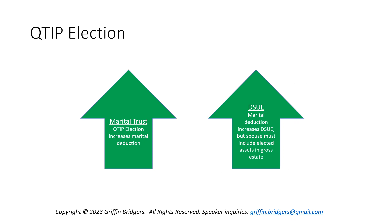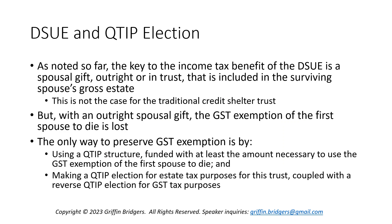As we can see here, the Q-tip election within the marital trust increases the marital deduction and the corresponding effect is that it increases the DSUI. The higher the DSUI, the greater the benefits we get — ideally and primarily that second step-up in basis at the surviving spouse's death. However, the trade-off is that the spouse must include those elected assets in their gross estate. That's the ticket to that second basis step-up. The difference from the traditional credit shelter trust is that the DSUI becomes like that additional basis step-up ticket that also offsets that deferred estate tax in the estate of the surviving spouse.